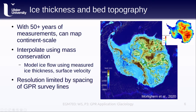We can also see how the resolution of the interpolated ice thickness and bed topography is limited by the spacing of the survey lines. In more heavily sampled areas, like West Antarctica, we see quite a bit of detail. In the interior of East Antarctica, where surveys are more spaced out, the estimated topography tends to be smoother and less detailed.